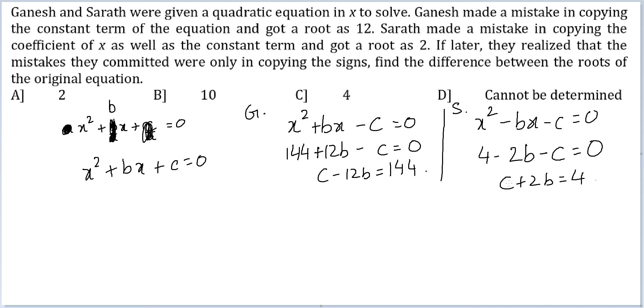Okay, so now I can do this minus this. I can do this minus this. So I would get c's cancel, 2b minus 12b. So 14b is equal to 4 minus 144, or 140. Sorry, minus 140. So b will be equal to minus 10.